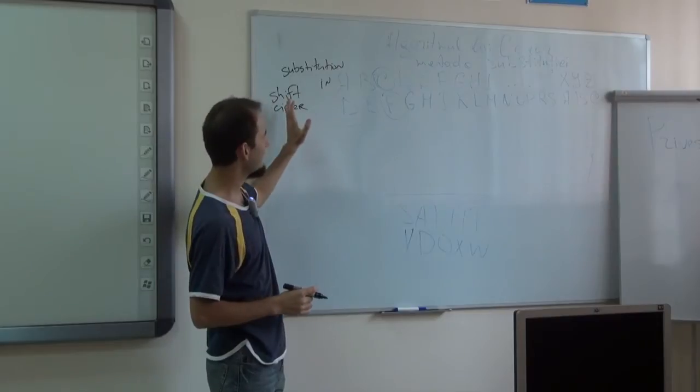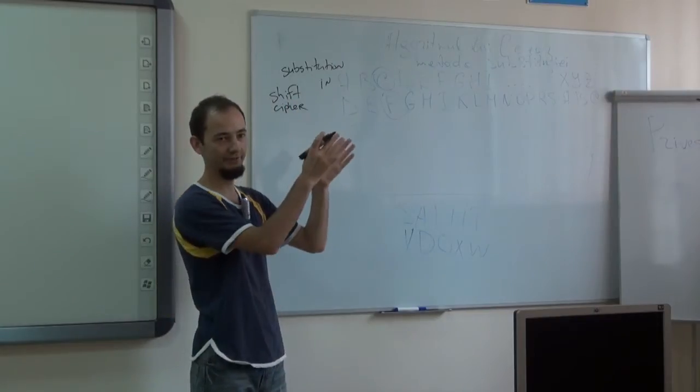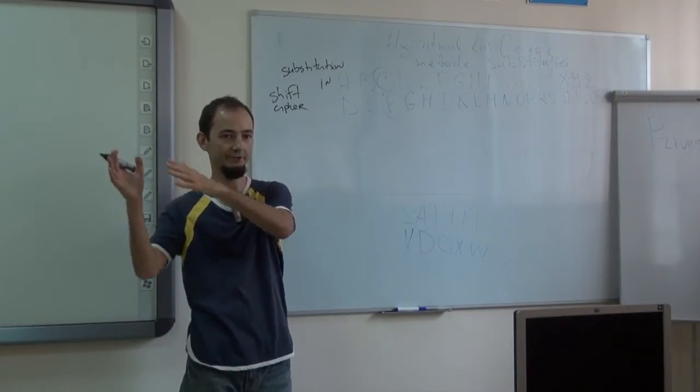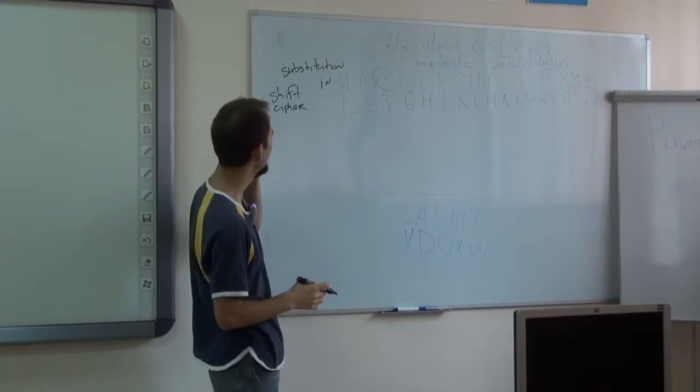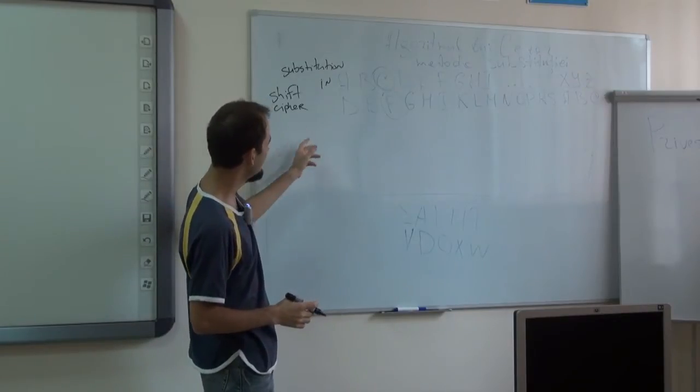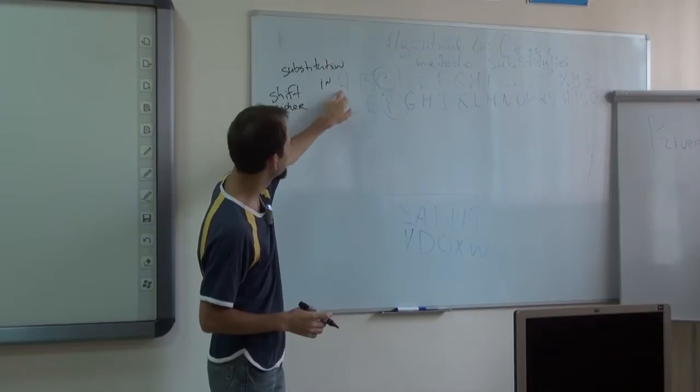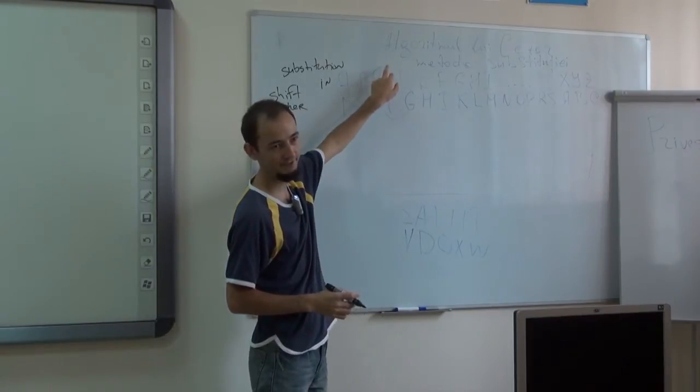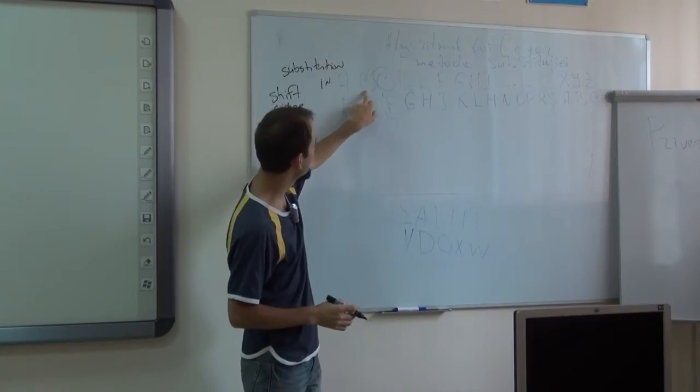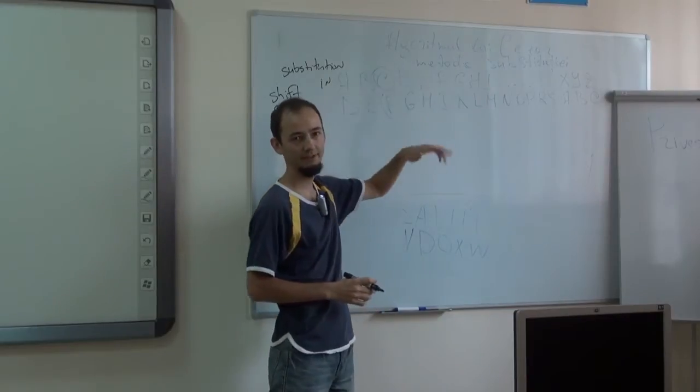And it's called the shift cipher because if you shift it alphabetically in one direction or another, for example, if the shift value is 2, then A becomes 1, 2, it becomes C, B becomes 1, 2, D, etc.